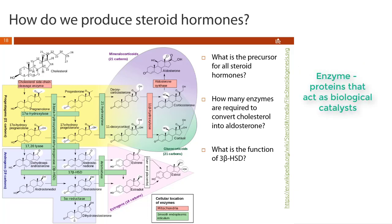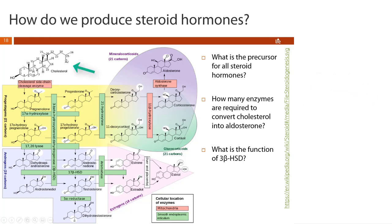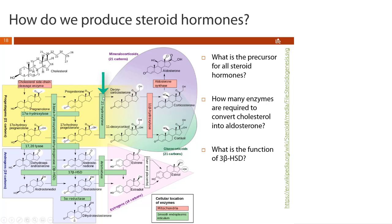Let's try another type of question: how many enzymes are required to convert cholesterol into aldosterone? Starting with cholesterol and following the series of enzymatic reactions to aldosterone: the first reaction is catalyzed by cholesterol side chain cleavage enzyme, the next by 3β-hydroxysteroid dehydrogenase, the next by 21-hydroxylase, and finally aldosterone synthase catalyzes the last reaction to give fully functioning aldosterone. Counting those up, that's five enzymes.